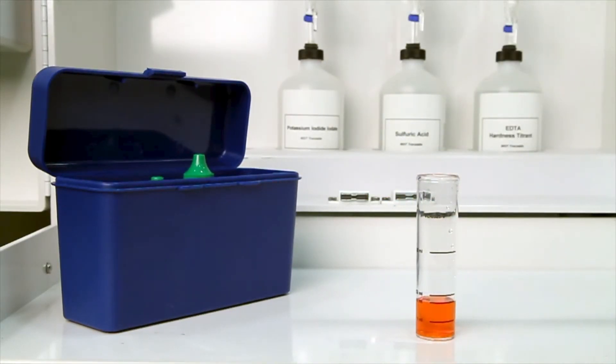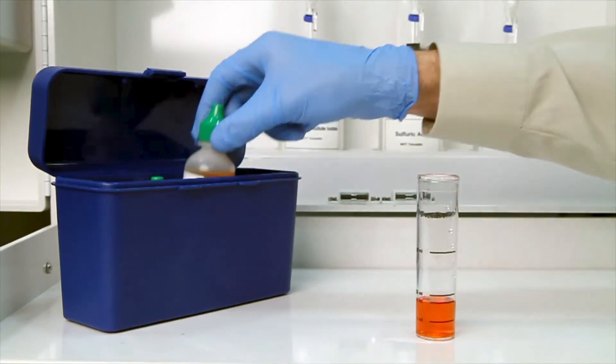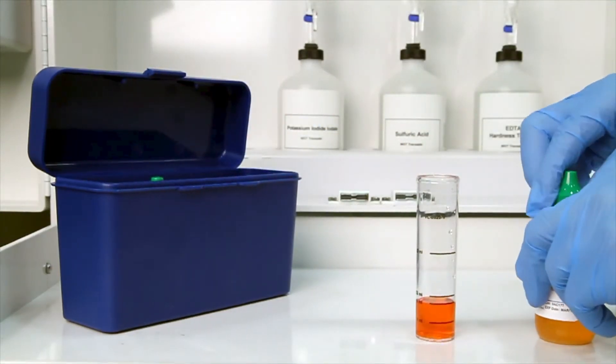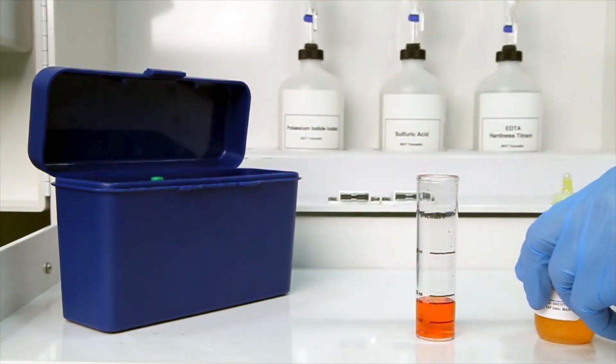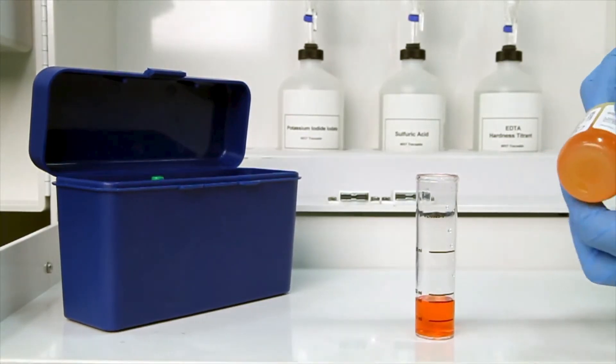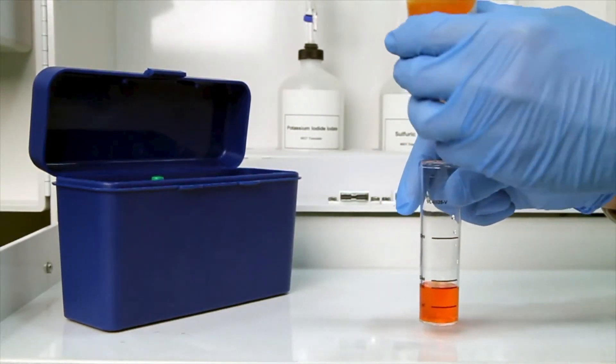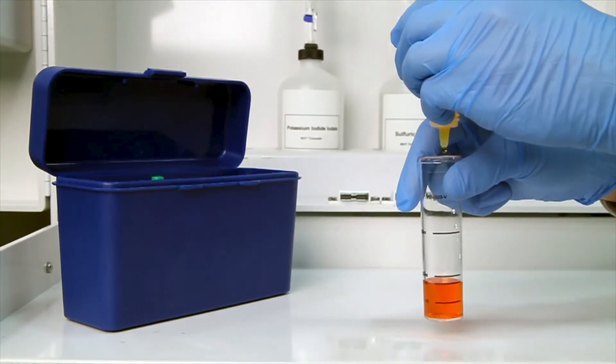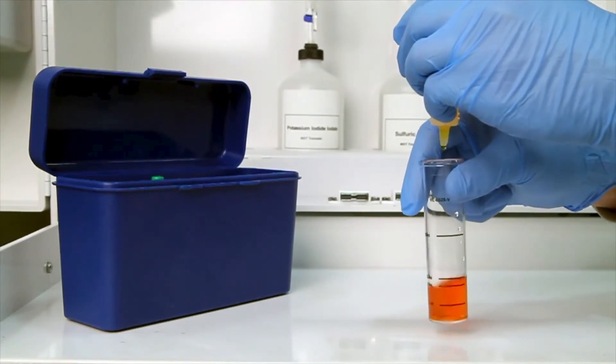The next step is to perform the titration using CRX sulfate 0.0791 normal. Each bottle of titrant is labeled with the equivalency and sample size it was manufactured for. It's important to make sure you have the proper titrant and the proper sample size for this titration.